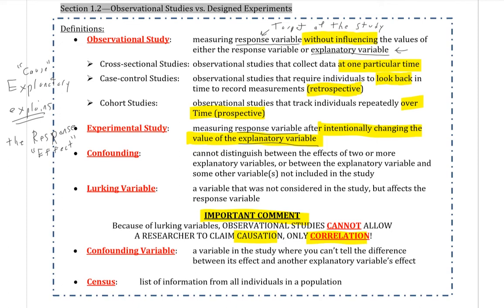Because of lurking variables, observational studies cannot allow a researcher to claim causation — only correlation. This is why I wanted to get away from 'cause and effect.' When doing an observational study where you can't really control anything, you cannot make the claim that one thing caused another. All you can say is that there was a correlation or connection between the two variables.